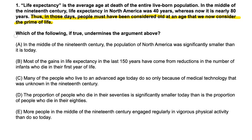In this case, it says: which of the following, if true, undermines the argument above? So we're looking to weaken it — to find an answer that overturns or rejects the conclusion. The conclusion is saying that people must have been considered old at an age that we now consider the prime of life. So back in the 19th century, a 30-year-old might have been considered an old grandpa.